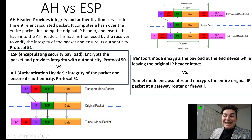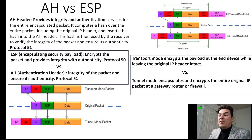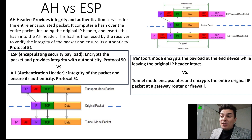The encapsulating security payload (ESP) is what was shown with transport and tunnel, because it encrypts the entire packet and provides integrity with authenticity. You need to know that ESP uses protocol 50 and that authentication header uses protocol 51.